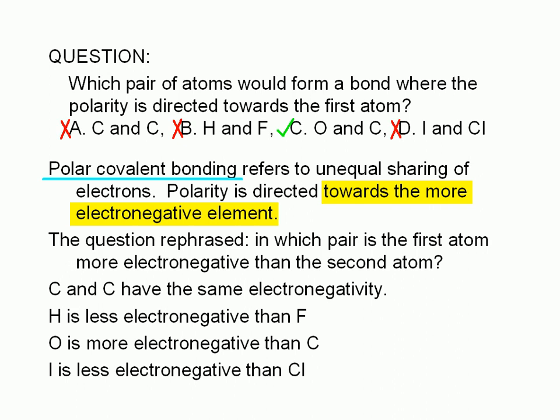Choice D is wrong. Chlorine and iodine both belong to group 7A. Electronegativity increases going up a column. Iodine is below chlorine.